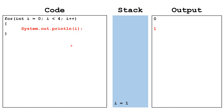We continue the loop, printing i=1, then increment i to two. We check is i still less than four — it is, so we print two, then increment to three. We print three, then increment i to four. We check: is the value of i less than four? It is no longer less than four. This boolean expression is false, so we terminate the loop and continue on to any code after the loop.